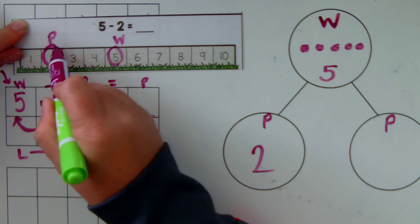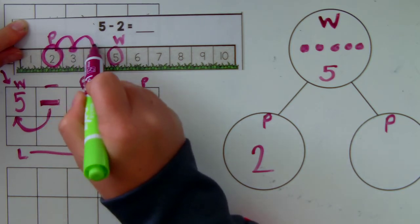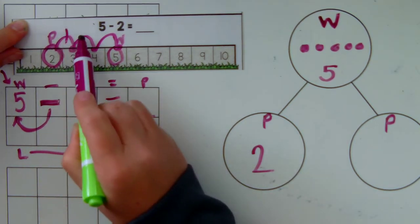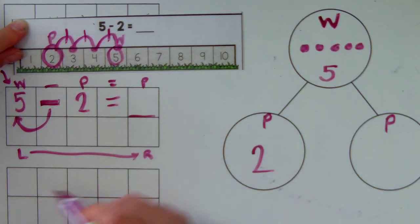And I can count jumps from the number 2 up to 5. Ready? 2, 3, 4, 5. How many jumps? 1 jump, 2 jumps, 3 jumps.